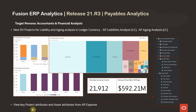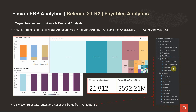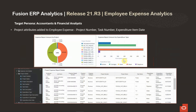In addition to this, we have added key project attributes and asset attributes to the AP expense subject area. This provides customers the ability to analyze the AP data by your asset or project attributes. We have also added project number, task number, and expenditure item date attributes to employee expense analytics subject area. This will allow customers to look at employee expense by project attributes. Here is a sample DV showing how you can analyze your expense report by project or by expenditure type.